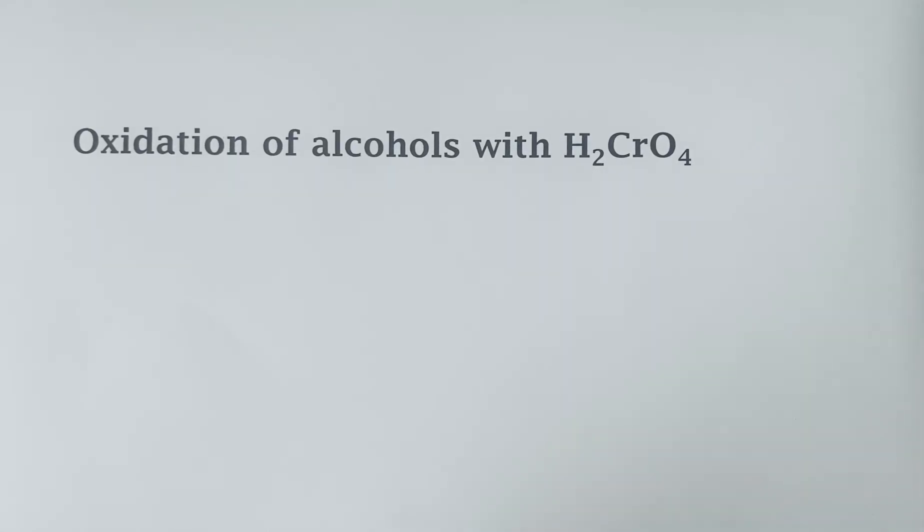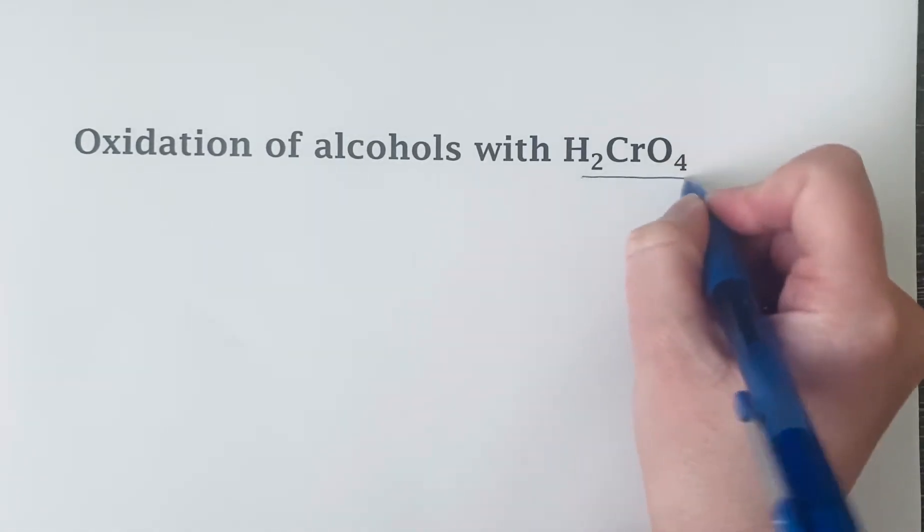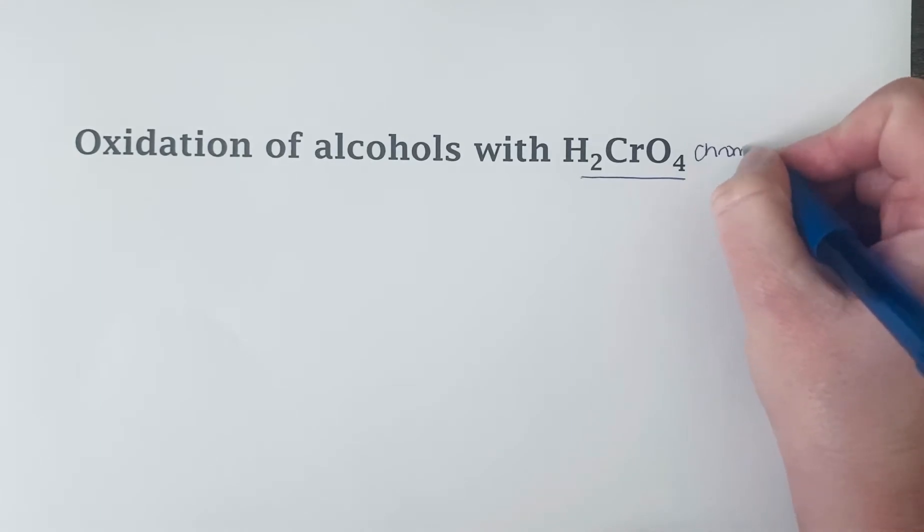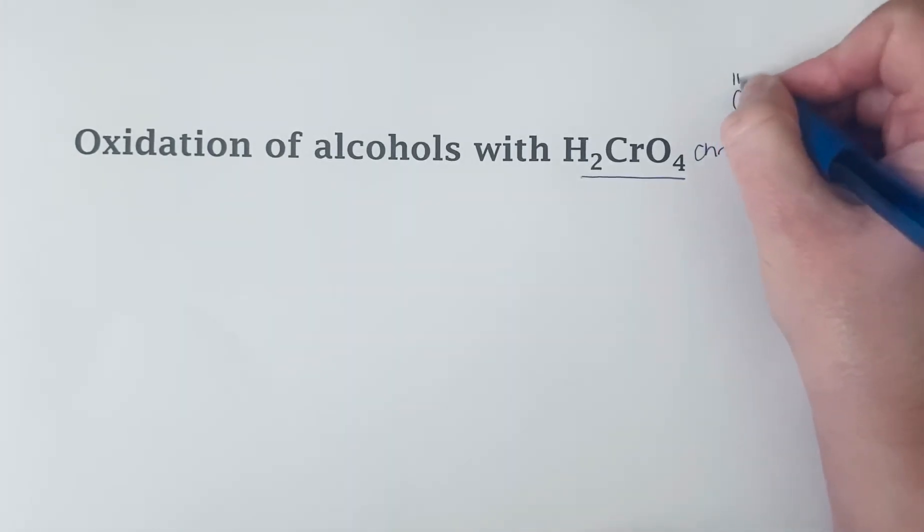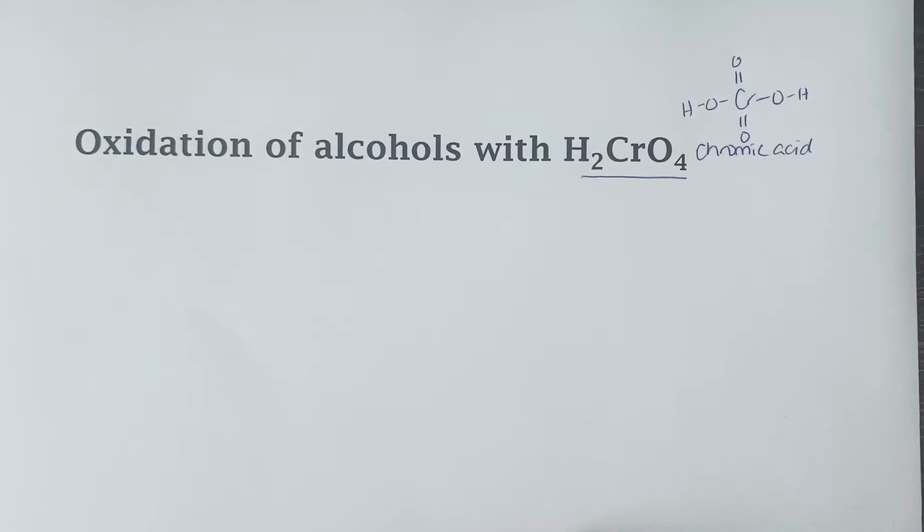The oxidation of alcohols with H2CrO4. So H2CrO4 is chromic acid and it has this structure. It looks a lot like sulfuric acid just with a chromium in the center instead of the sulfur for sulfuric acid.